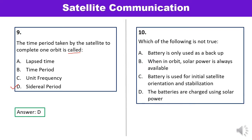Question 10: Which of the following is not true? The options are: battery is only used as a backup (correct); when in orbit solar power is always available (not true — in unfavorable atmospheric conditions when solar power is unavailable, battery is used); battery is used for initial satellite orientation and stabilization (absolutely correct); batteries are charged using solar power (also true). Option B is not true — answer B is correct.